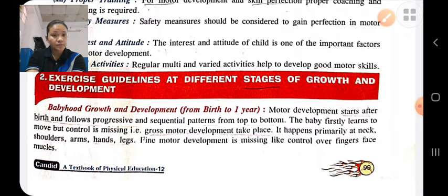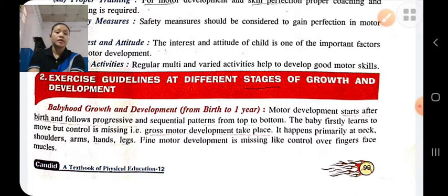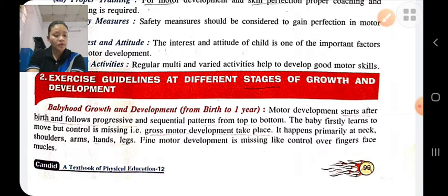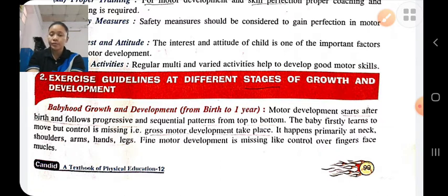At the babyhood stage, gross motor development takes place. Motor development starts after birth and follows progressive and sequential manner from top to bottom. It happens primarily at the neck, shoulders, and arms. Fine motor development at the babyhood stage is missing; the child is unable to control his fingers, face, etc.